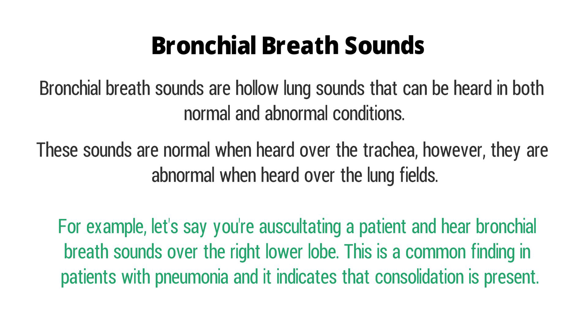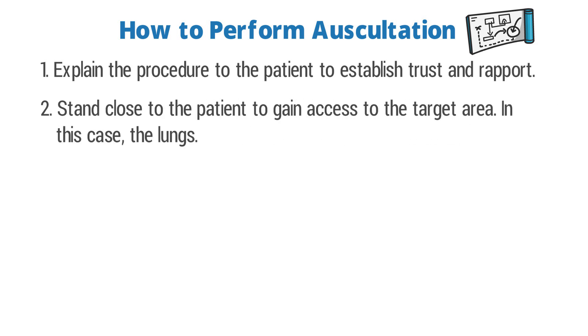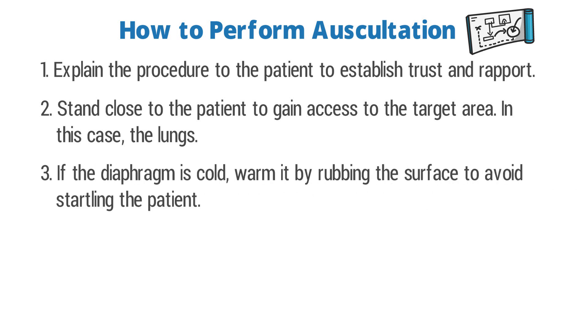Now that we've covered all the different types of breath sounds and lung sounds, let's go through the steps of performing auscultation of the lungs. First, explain the procedure to the patient to establish trust and rapport. Stand close to the patient to gain access to the target area — the patient's chest or thoracic area. If the diaphragm of the stethoscope is cold, be sure to warm it up by rubbing the surface to avoid startling the patient.